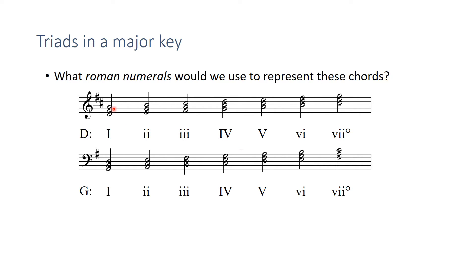Well, it means this is a D, F sharp, A chord, so it's major. E, G, B is minor. F sharp, A, C sharp is minor. G, B, D is major. A, C sharp, E is major. B, D, F sharp is minor. And C sharp, E, G is diminished.